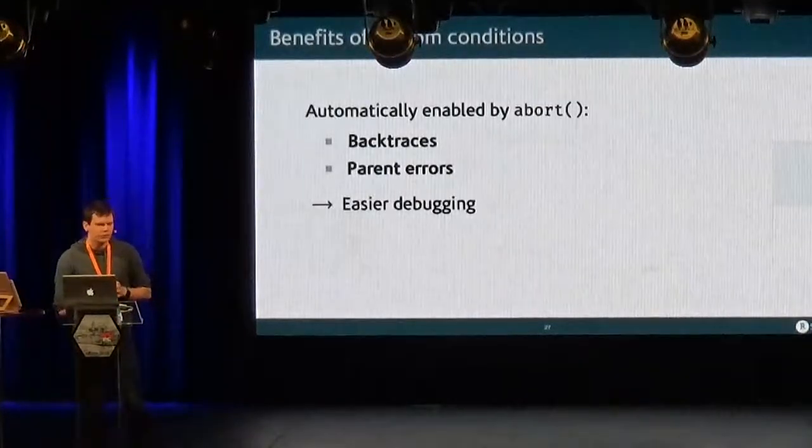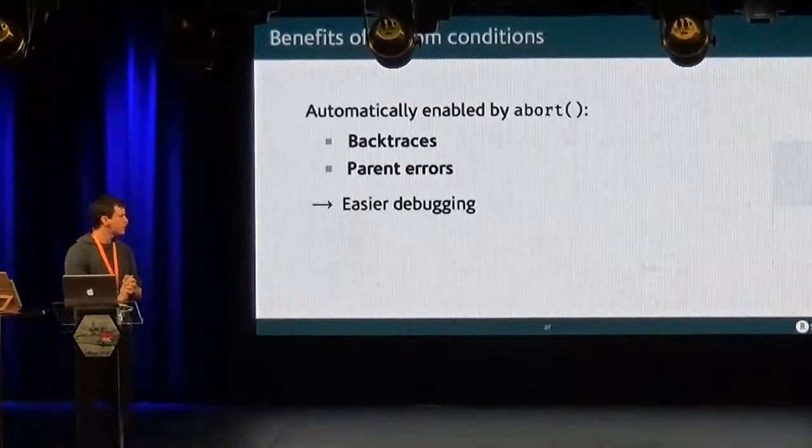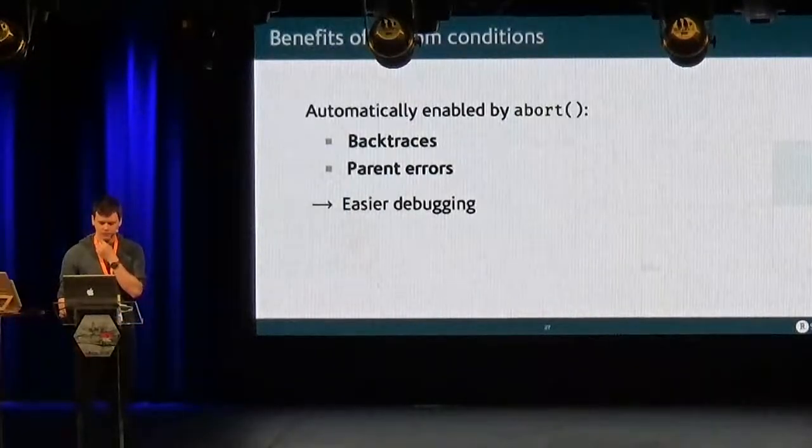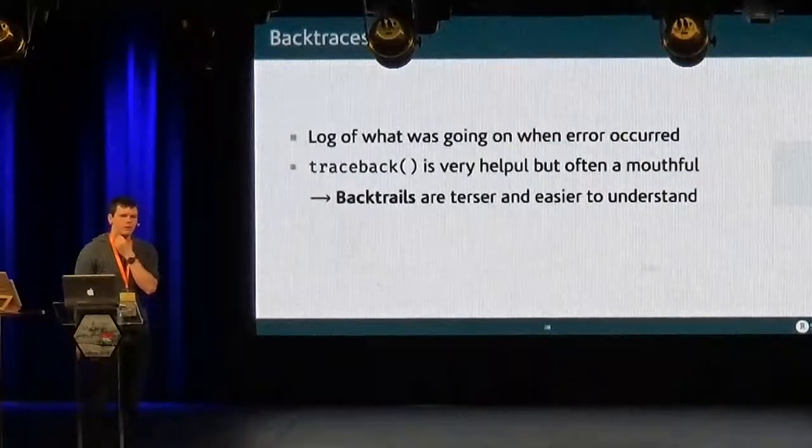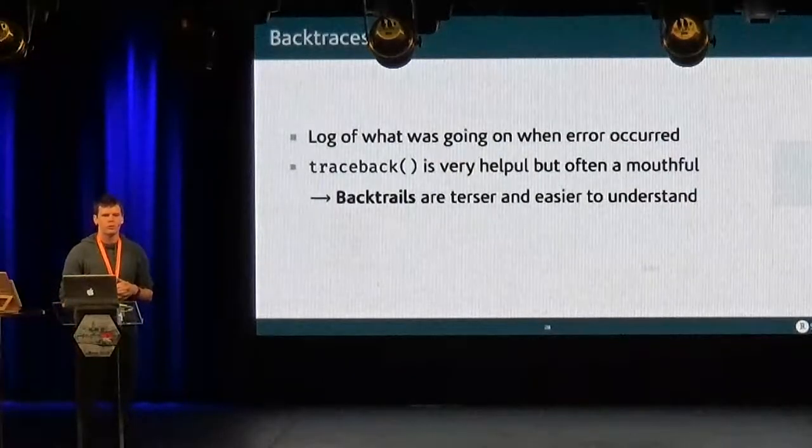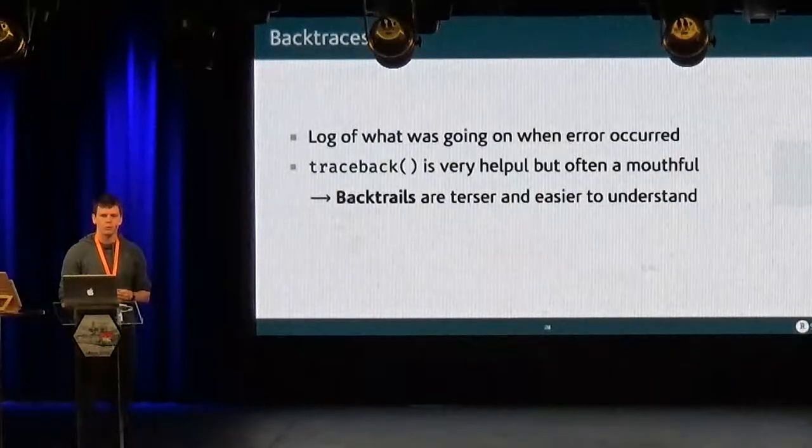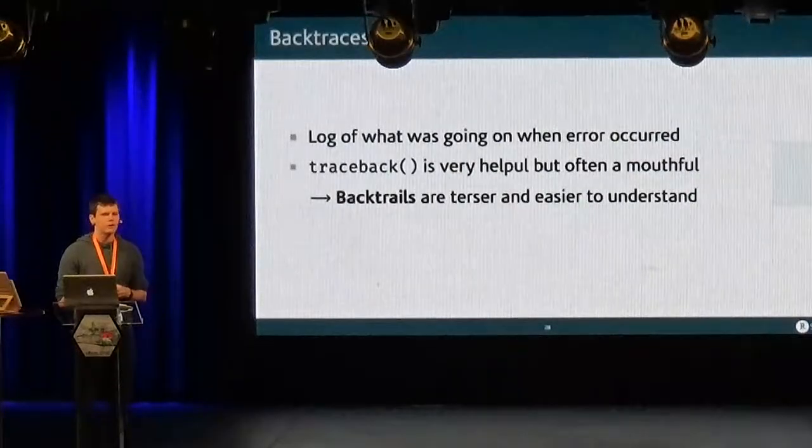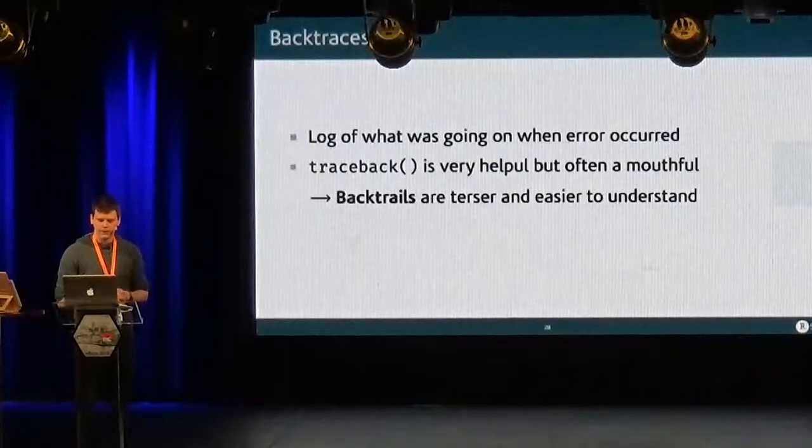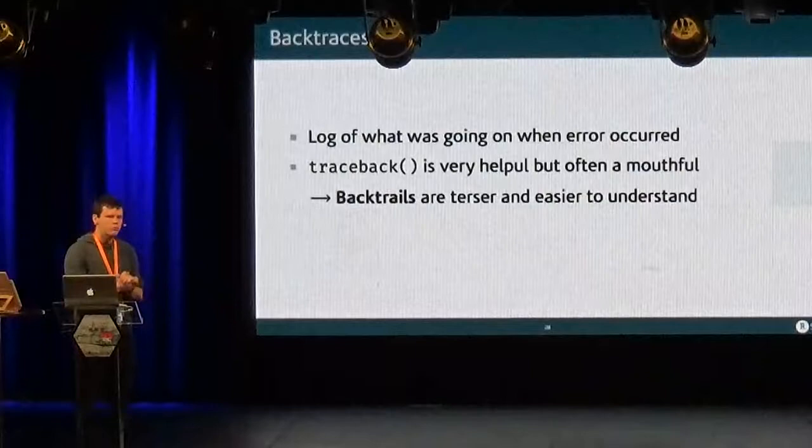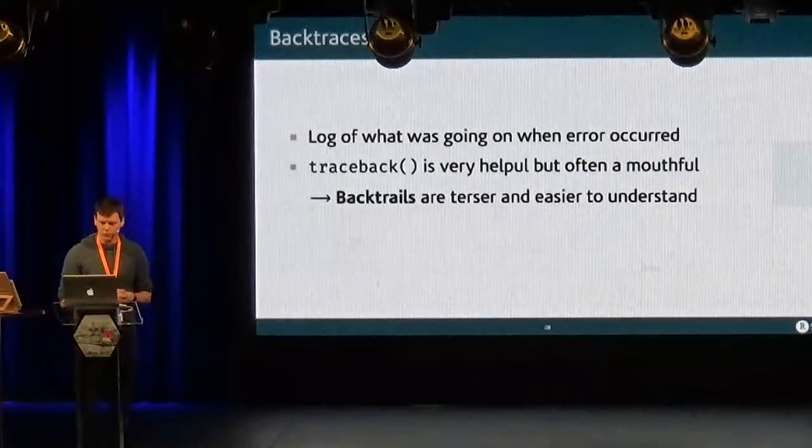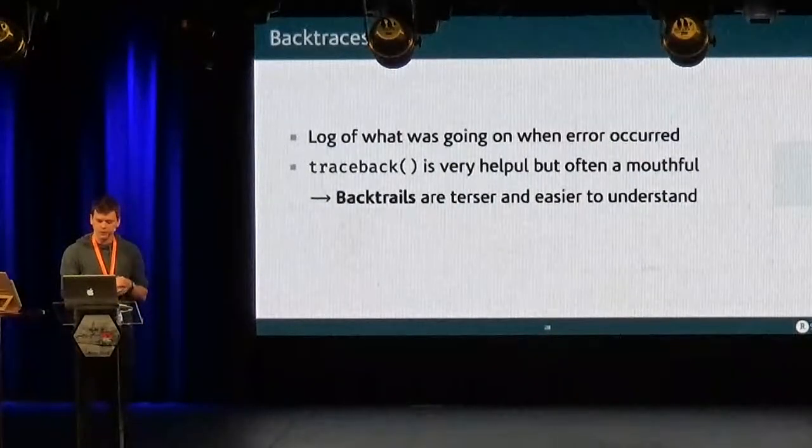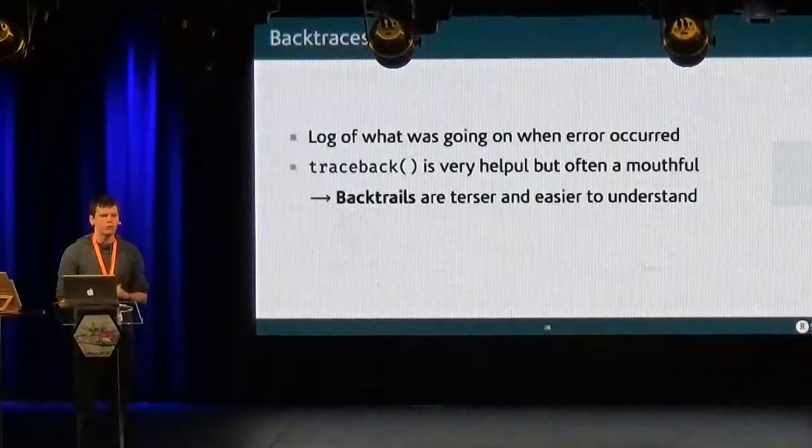And then we have these features that are automatically enabled by abort. We have the backtraces and the parent errors, and we are hoping that we make for easier debugging. So backtrace, a backtrace is a log of what was going on when an error occurred. So it's very helpful for debugging. And so one function that is very helpful to know about is traceback, because it gives you the backtrace for the last error. The problem is that sometimes it can be quite a mouthful. You can get a large output, and it's hard to find the information that you need to help you. And so we have come up with these backtraces, which will be much more focused and easier to understand.